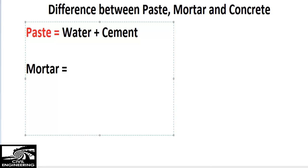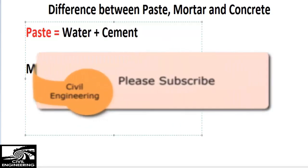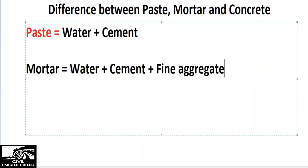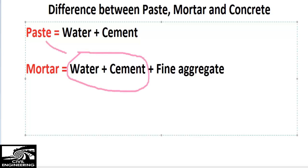What about mortar? Mortar involves paste as well as fine aggregate. So mortar contains water plus cement plus fine aggregate. This is the definition of mortar, or we can say that mortar is a combination of paste plus fine aggregate.